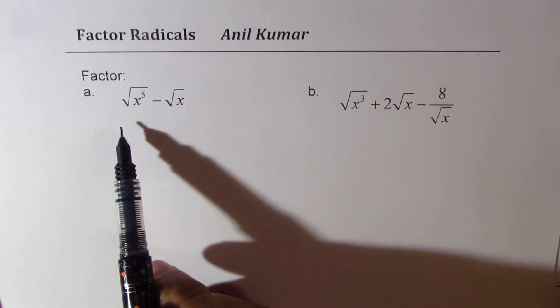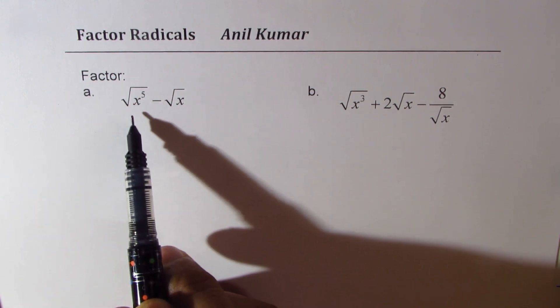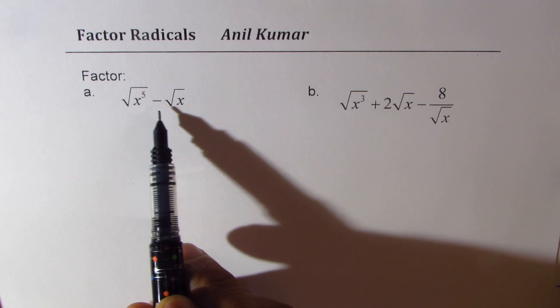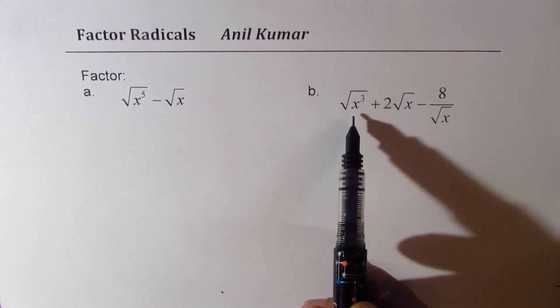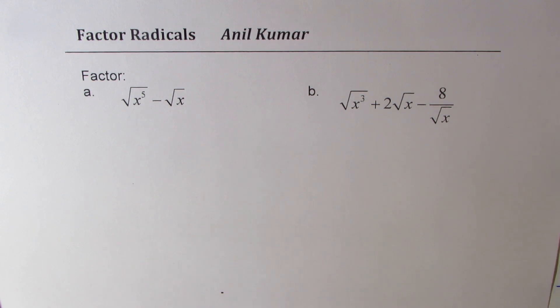Example A: square root of x to the power of 5 minus square root of x. And B is square root of x cube plus 2 times square root of x minus 8 over square root of x.